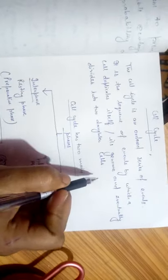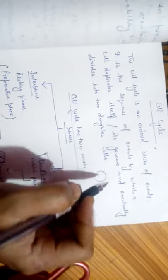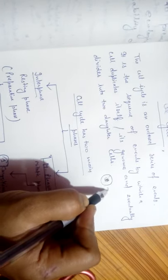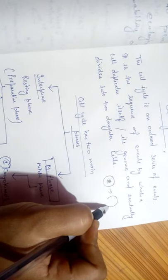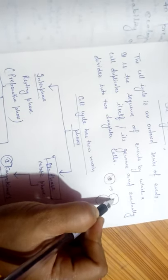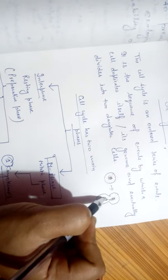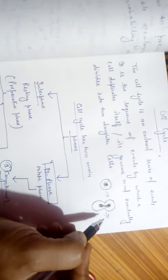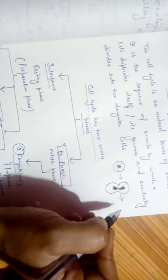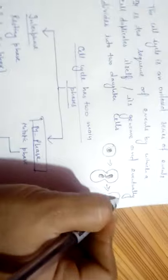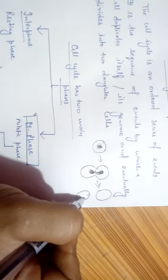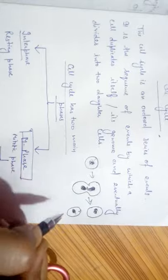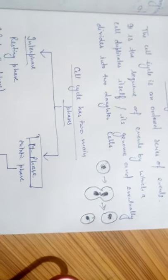Just like this, we have a single cell and this is the nucleus. After some time, karyokinesis occurs and cytokinesis also occurs. Karyokinesis is the division of the nucleus, and cytokinesis is the division of the cytoplasm. That is the last stage when a single cell gives rise to two daughter cells.